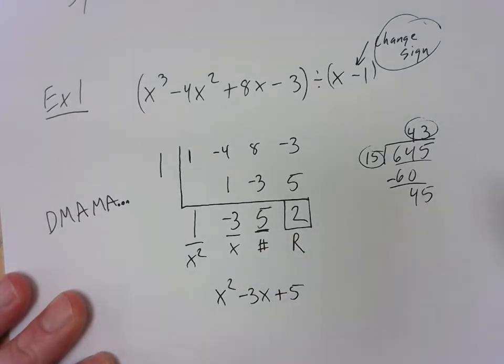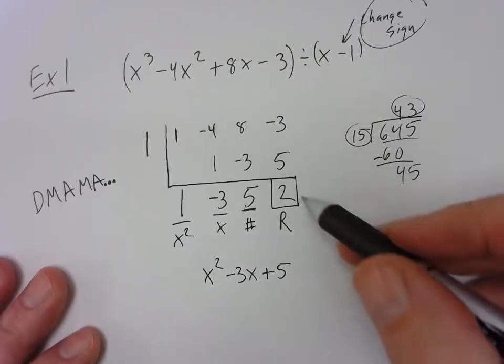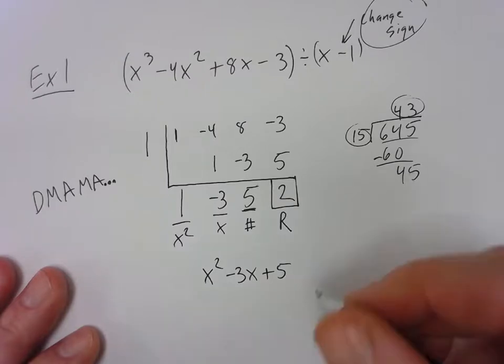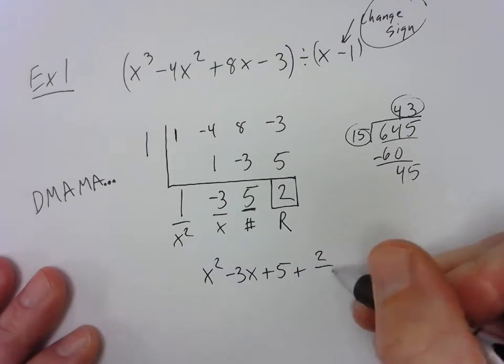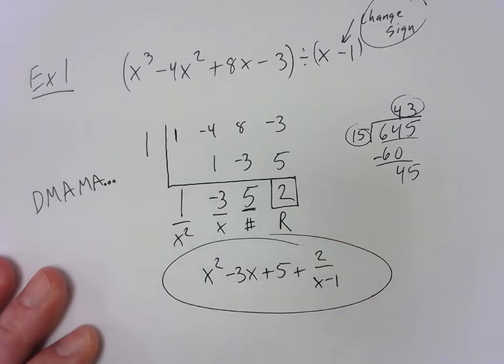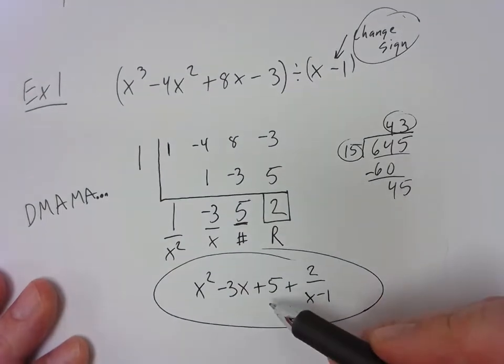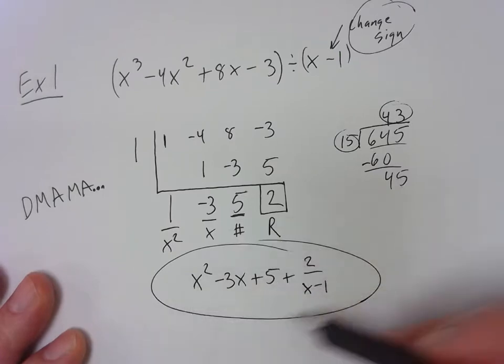Now what is a remainder? A remainder is a slice of the pie. It's a fraction. So we need to express our remainder not as r2, but as a fraction. Like if you eat some pizza and you have a leftover pizza, you have some remaining. So we write it as a fraction. Negative 2 would be minus 2 over what I divided by, x minus 1. So that would be the answer to this problem. This divided by this is equal to this here. So the dividend divided by the divisor is my quotient.